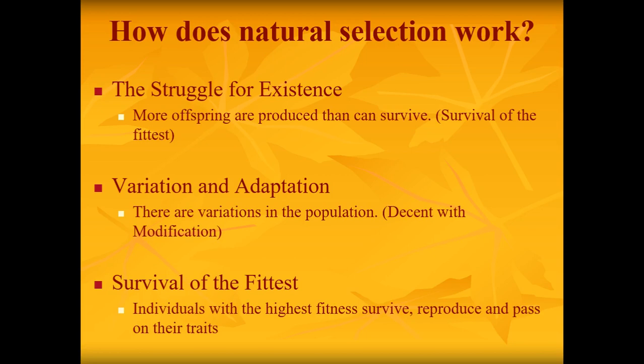We also have variation and adaptation. There are variations in the population — let's say a duck has many babies, they're not all exactly the same, they're a little bit different. And that's the same with descent with modification: they're descending from mother to offspring and they are modified just a little bit. Then there's survival of the fittest — individuals with the highest fitness survive and reproduce and pass on their traits. You can see how all three of these are so closely related and they all fit under the umbrella of natural selection.